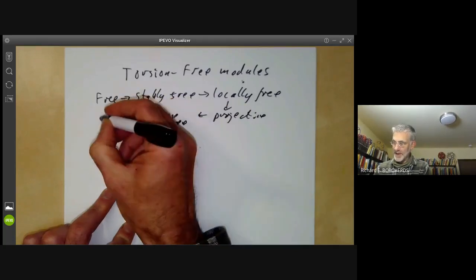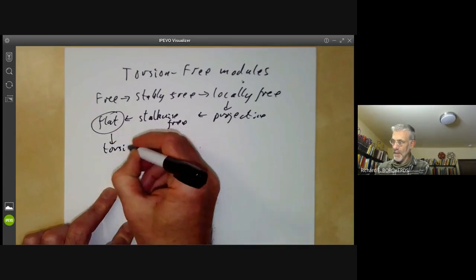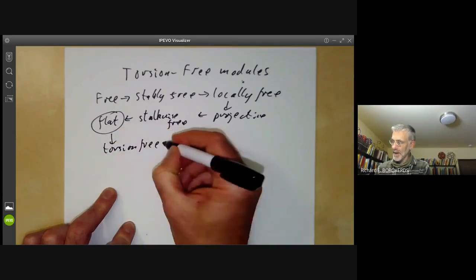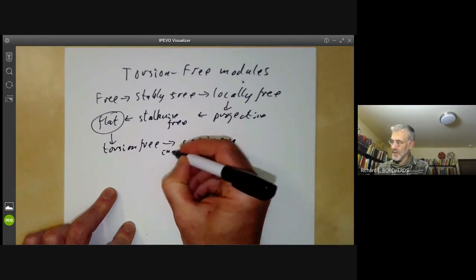Which implies flat, which is the really important one, and this implies torsion-free, and this implies that it's co-primary, at least over integral domains.